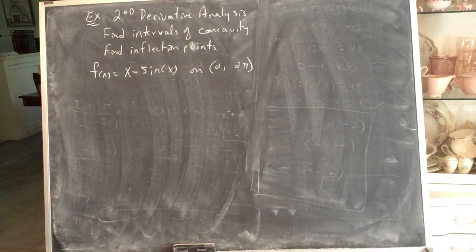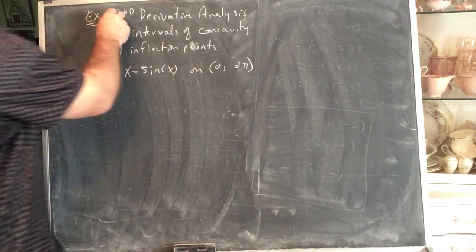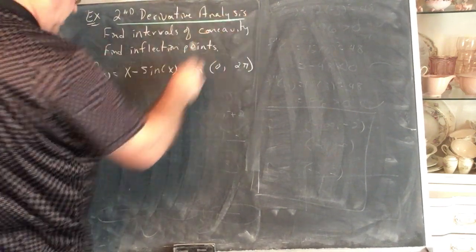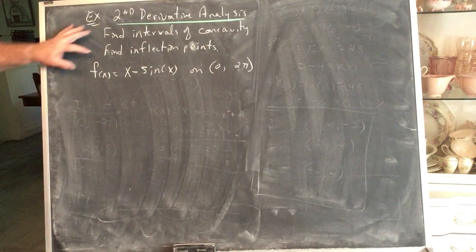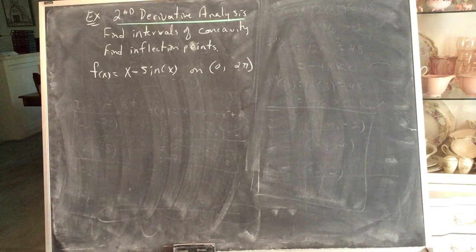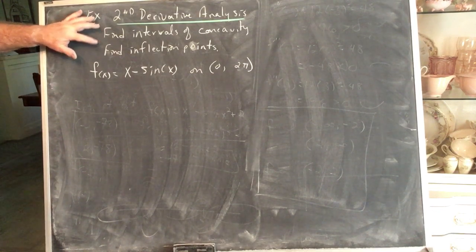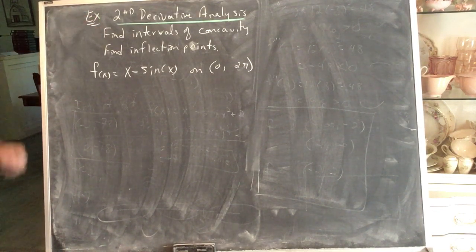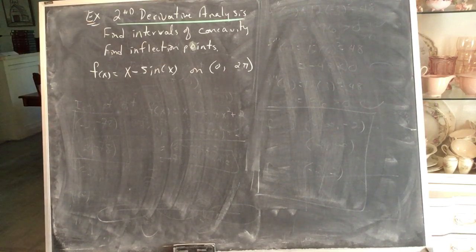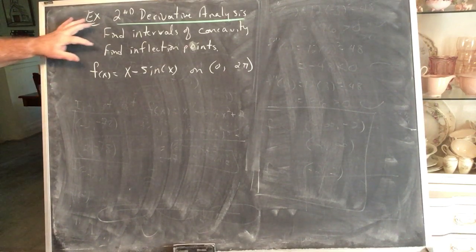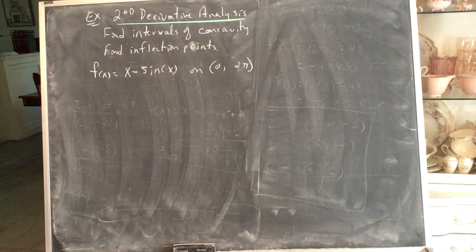We're going to see if we can put this all together. We're going to do the second derivative analysis — finding the intervals of concavity and the inflection points. There might not be intervals where it's concave down, there might not be any inflection points, but if there are any inflection points, we're going to find them.